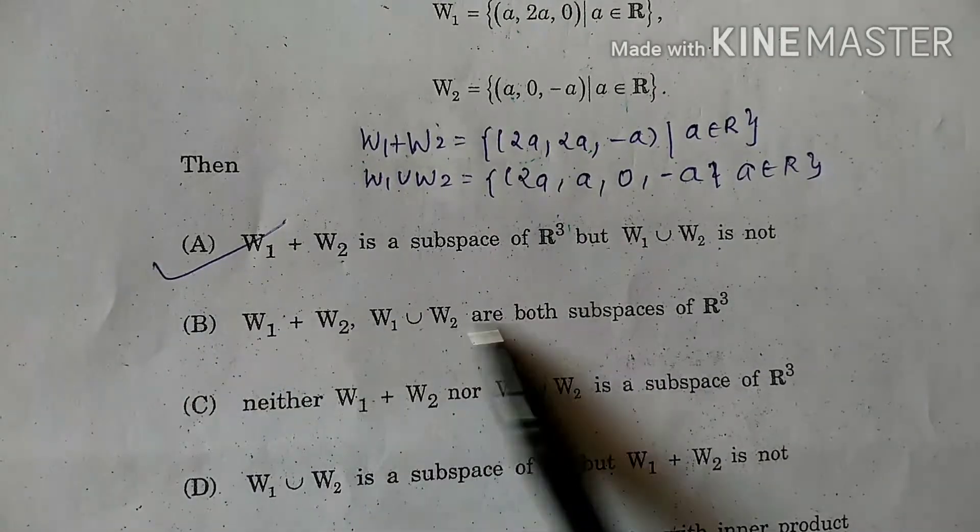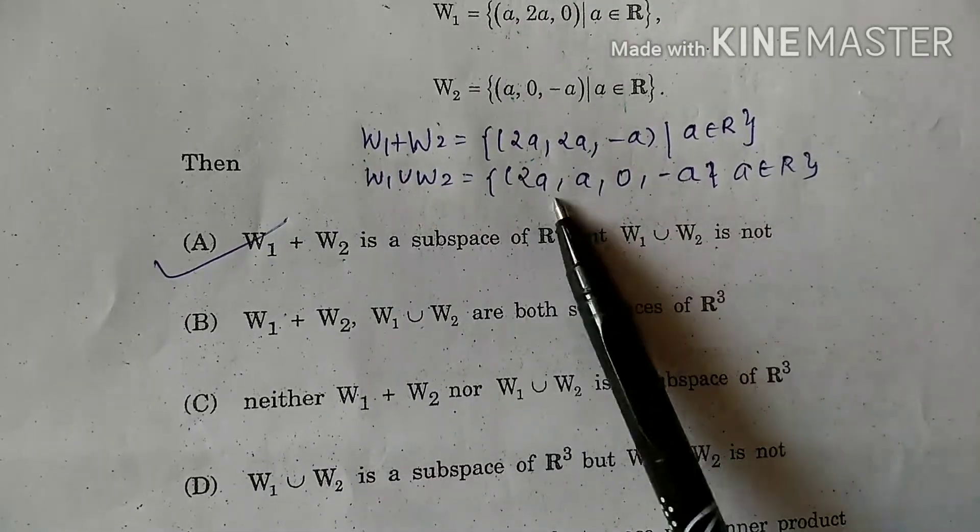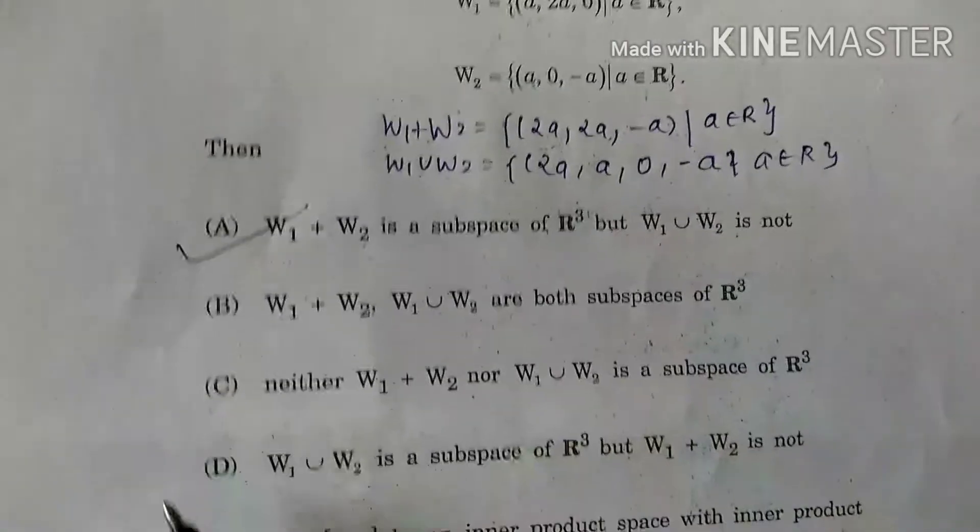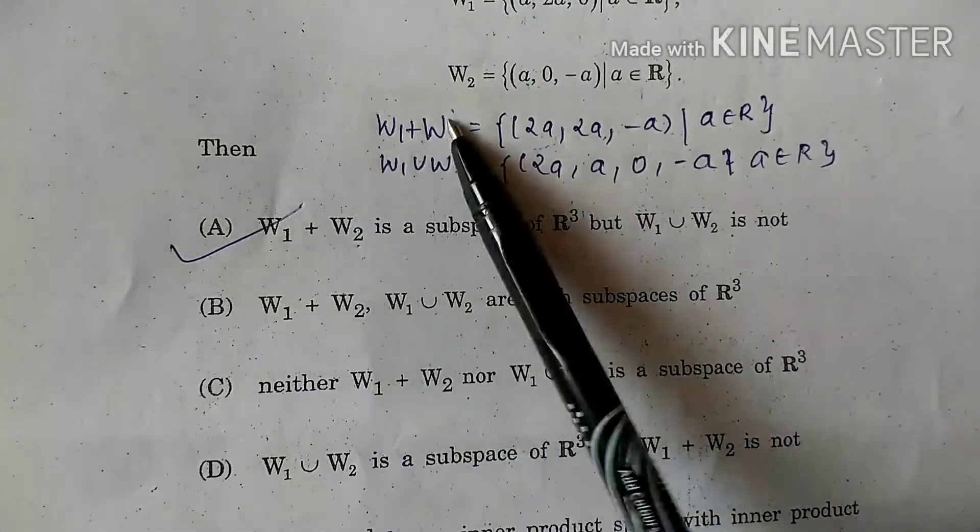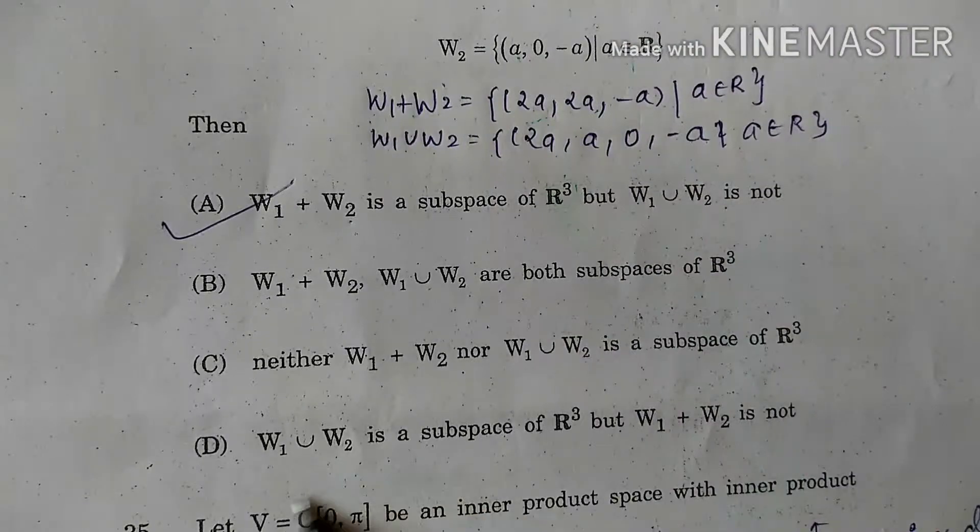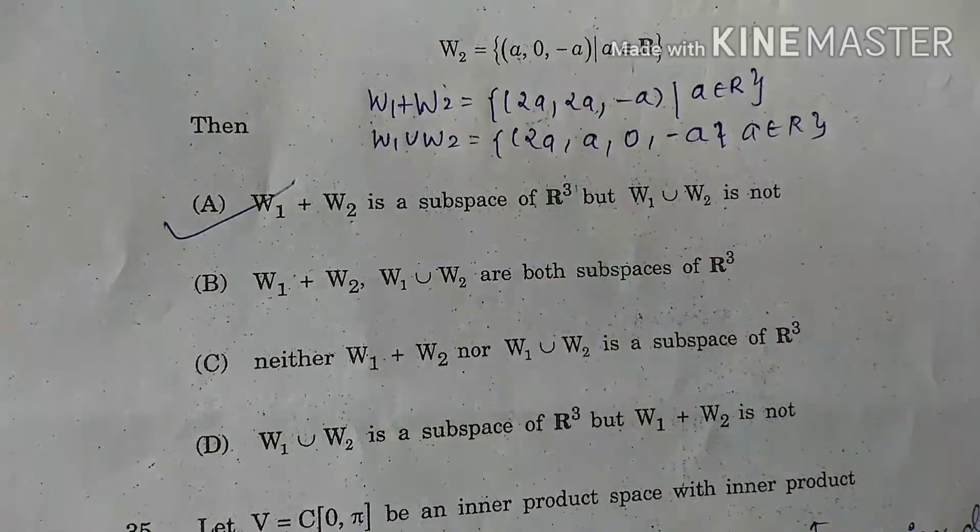Next is that both spaces are subspaces - these are not the spaces because we have seen in union that there are 4 elements. C option says neither of them. But W1 plus W2 is subspace. Fourth option says union is subspace but sum is not. That is wrong.